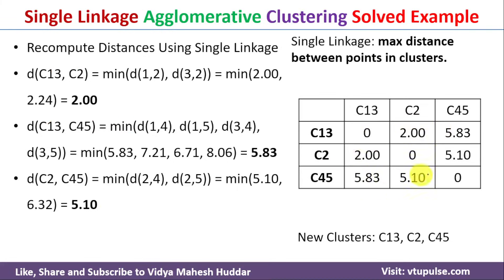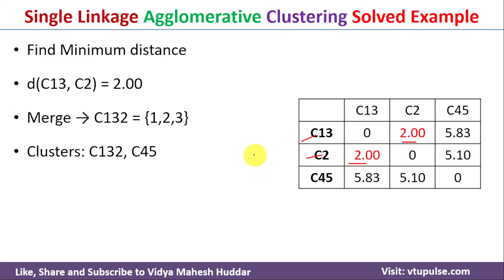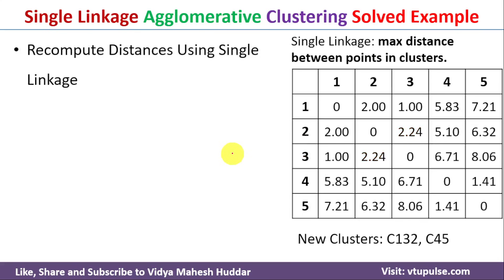After updating the table, the minimum distance is 2, which is between clusters C13 and C2. So we merge these two clusters to form new cluster C132. The updated clusters are now C132 and C45.